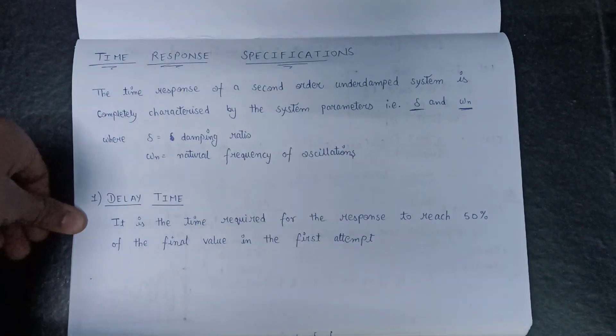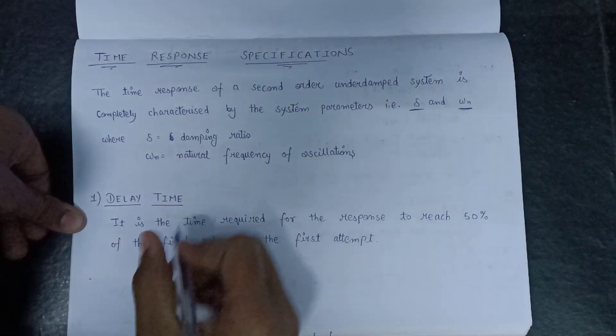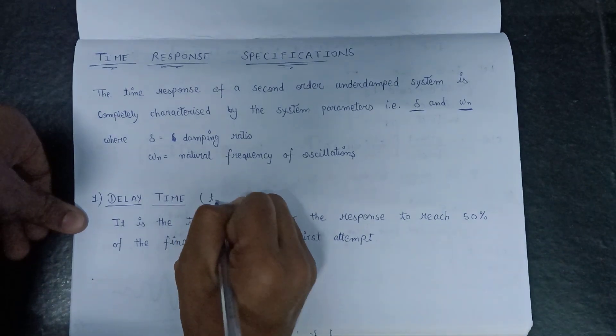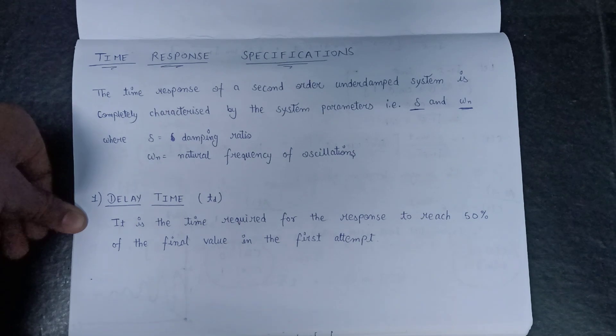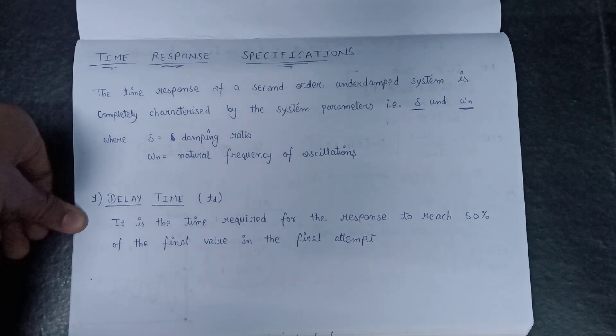Delay time can be denoted by the symbol T_D. So it is written as T_D, and there is also an expression for finding the delay time.